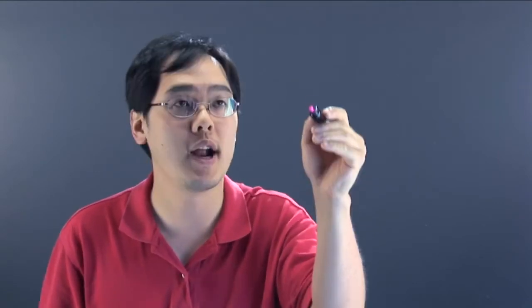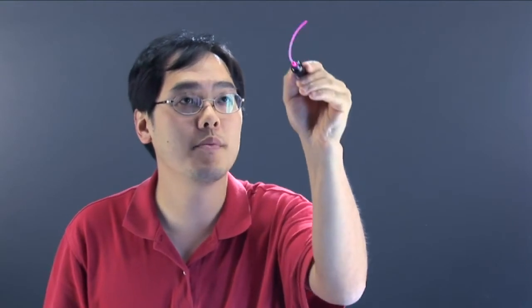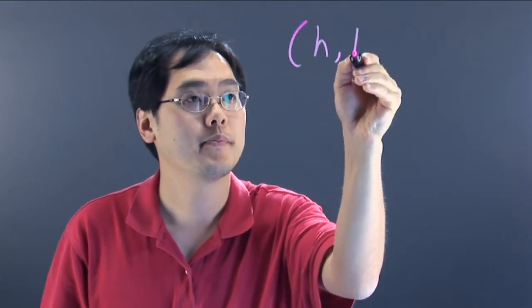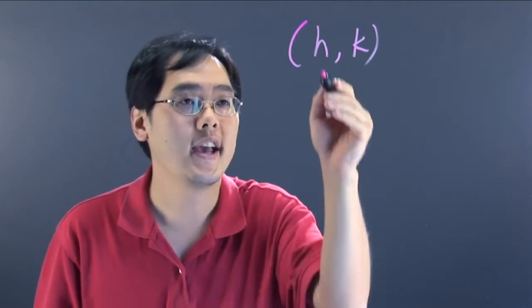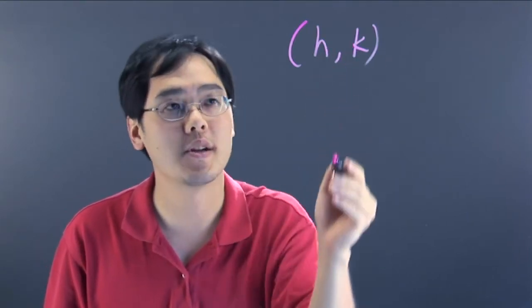The vertex is always the very first thing that you should find because it gives you an idea as to where the tip of the parabola is. Depending on the form, the parabola coordinates are going to be what's called h and k. h is the x coordinate, k is going to be the y coordinate.